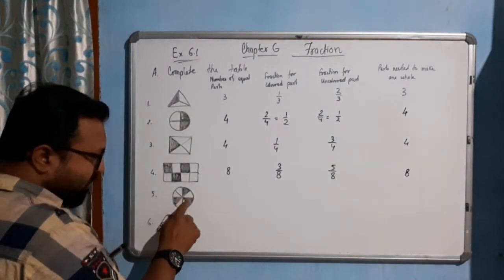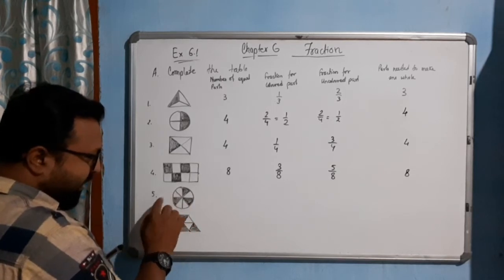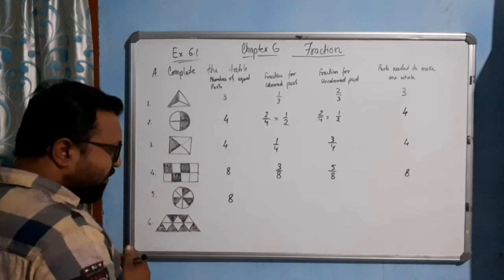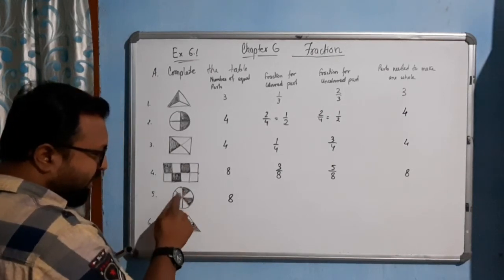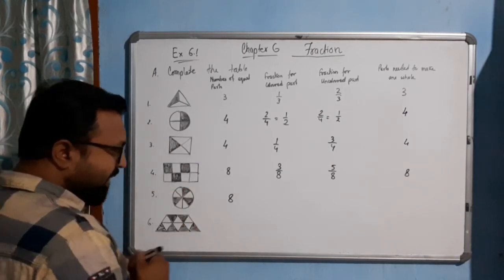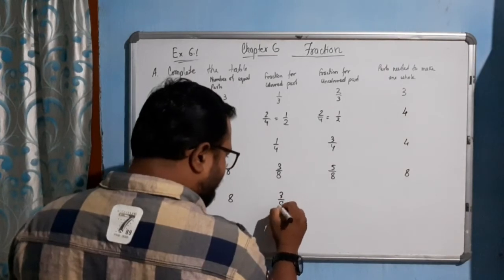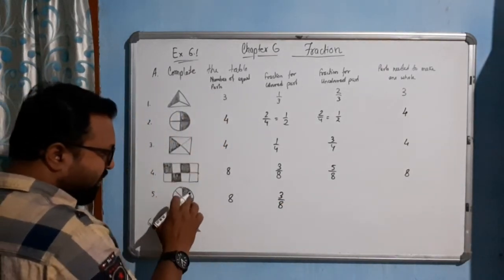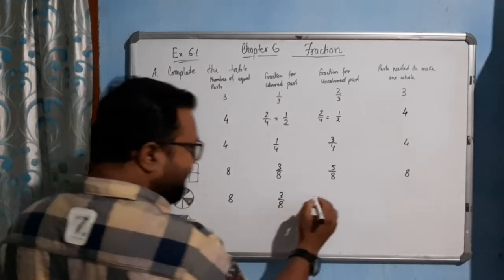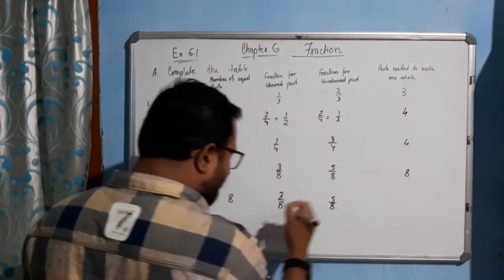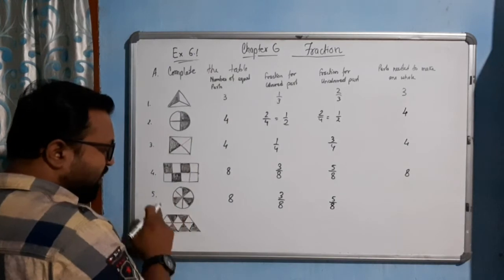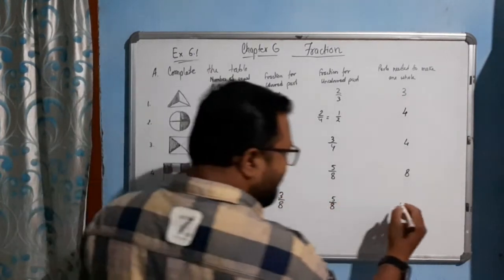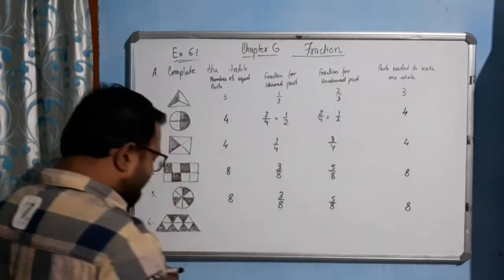Again in question number 5, how many parts do we have? 1, 2, 3, 4, 5, 6, 7, 8 — 8 equal parts. How many parts are colored? 3 parts are colored, so 3/8 is the fraction of colored part. What is the fraction of uncolored? 1, 2, 3, 4, 5 — so 5/8 will be uncolored. How many parts are required to make a whole? All 8 parts should be shaded, so we write 8.